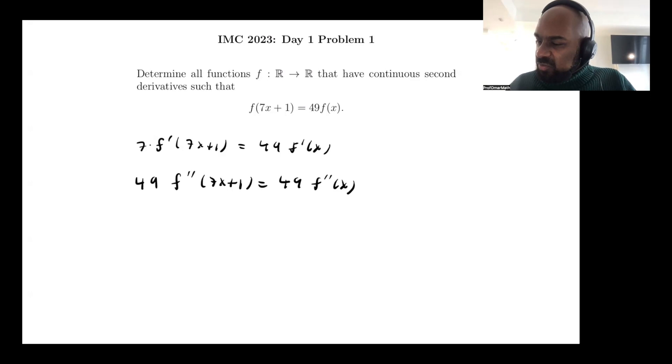Now we have these two 49s, they divide each other out. So we're left with this equality that f'' at 7x plus 1 equals f'' at x. And the continuity of the second derivative is going to give us something very interesting that will get us to characterizing the functions that satisfy this.